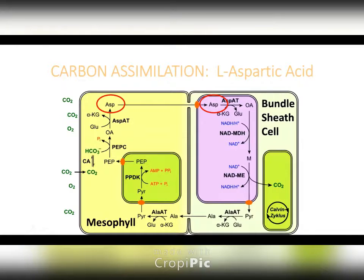With aspartic acid, we have that opportunity in warm-season turf. And then on the back end, when carbon exits those cells, you need alanine. But that's a discussion for another day.